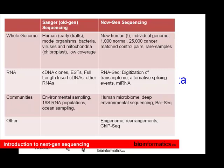For whole genomes we've done the early drafts of the human genome, model organisms, bacteria, viruses, mitochondria, chloroplasts, and many things at low coverage. For example, the first dog genome was 2x coverage, and the cow genome was about 5x coverage.